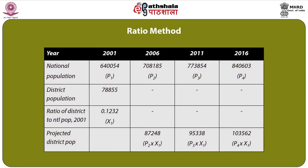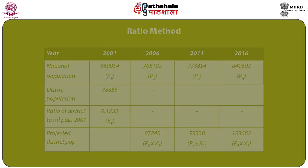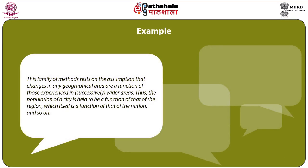The table clearly depicts the national population next to the district population, then the ratio of district to national population, and the projected district population over the periods 2001, 2006, 2011, and 2016, expressed in terms of population sizes. The family of ratio methods rests on the assumption that changes in any geographical area are a function of those experienced in successively wider areas.